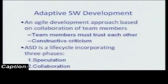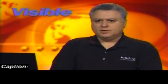Adaptive Software Development is based on the collaboration of team members. This is not a surprise since it is one of the Agile development core concepts. Trust is built into the process. Adaptive adds constructive criticism — meaning provide meaningful feedback to each other and don't take it personal. The intent is to improve the process, not to offend a person.